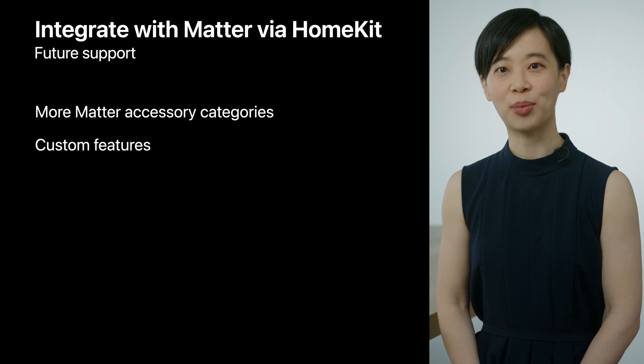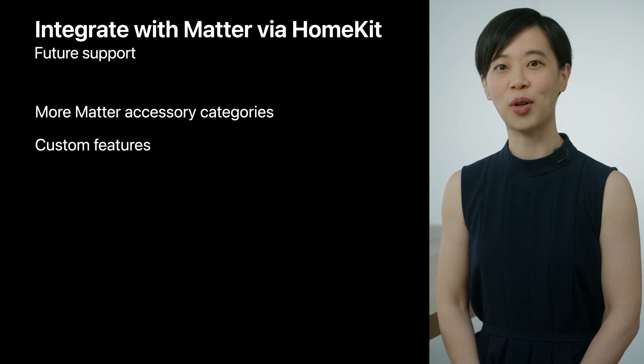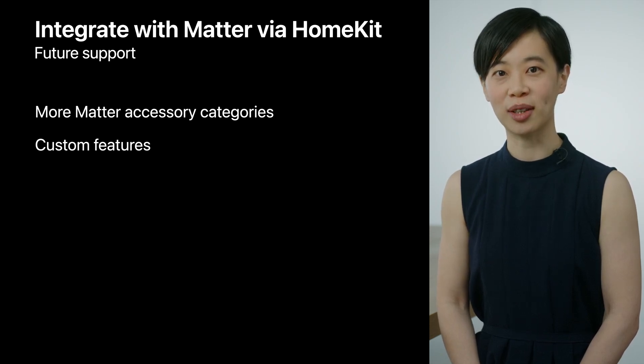HAP as a protocol supports custom characteristics. It allows manufacturers to build creative custom features with their accessories and access them through HomeKit. Matter as a protocol supports custom features too, so we'd like to connect the dots and provide you access to Matter custom features via the HomeKit framework. This feature will be coming in a later release, so stay tuned. In short, we are committed to seamlessly integrating Matter with HomeKit. When you use HomeKit to integrate with Matter accessories, you get features like secure remote control and automations for free, thanks to the power and intelligence of Apple smart home hubs such as HomePod and Apple TV.